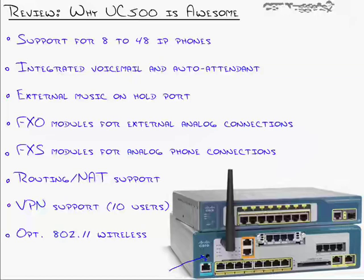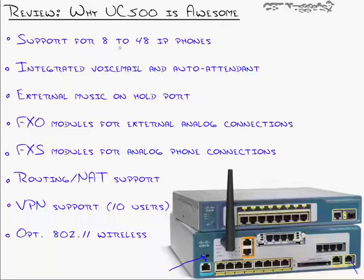It has FXO modules for outside analog connections and FXS modules for analog phone connections. You can even buy a T1 module for some UC500 models, so if your business starts growing and gets a 24-channel T1, you can do that too. It also handles routing and NAT support on the data side. You've got your Ethernet port in, a built-in switch with Ethernet ports out, and an uplink to connect micro-sized external switches to expand from 8 up to 48 phones.